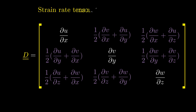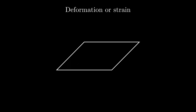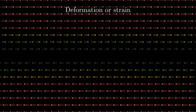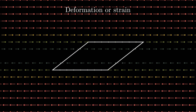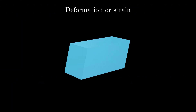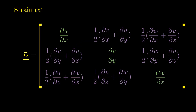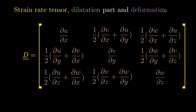Now let's look at the other part of the strain rate tensor: the deformation part. These matrix entries show deformation or strain. By placing our rectangle in a vector field we can see this in action, and for a 3D element strain looks like an off-diagonal symmetric structure. So this is the strain rate tensor with both the dilatation and the deformation part.